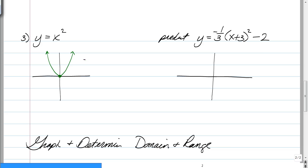So what would the graph look like if we were going to put an X plus 3 inside what's being squared, a minus 2, and then make it negative and scale it by 1 third? It's going to squish it, flip it upside down,